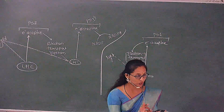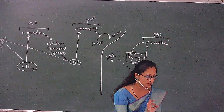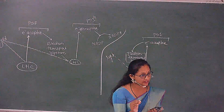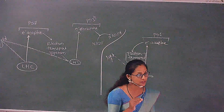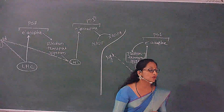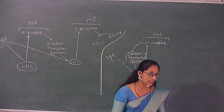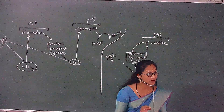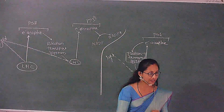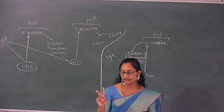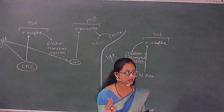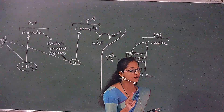If ATP synthesis is happening in the presence of light, it is called photophosphorylation — this occurs during photosynthesis. Second, oxidative type of phosphorylation occurs in respiration.